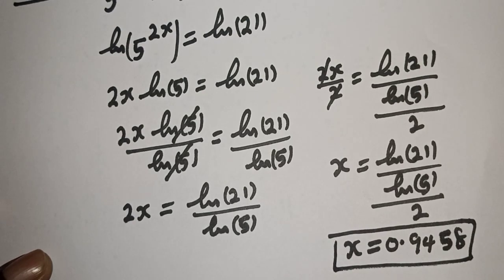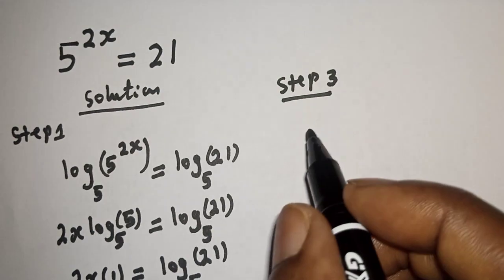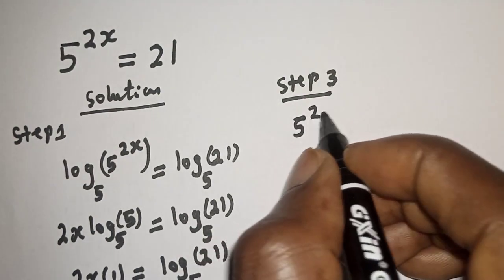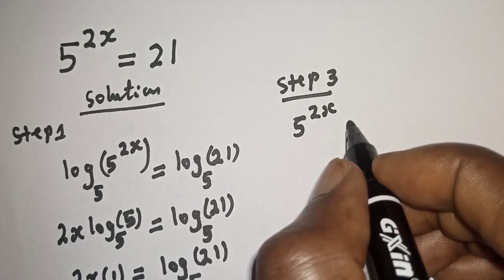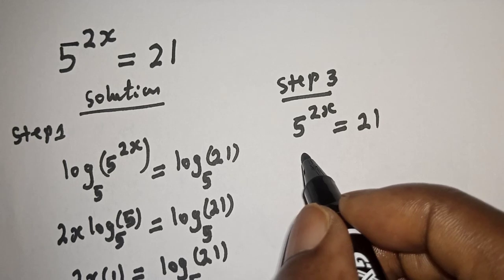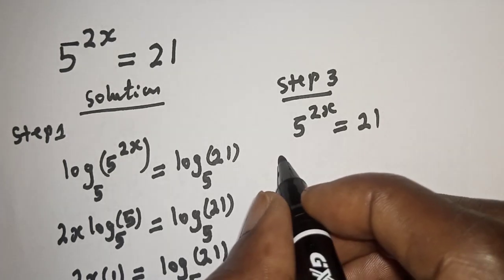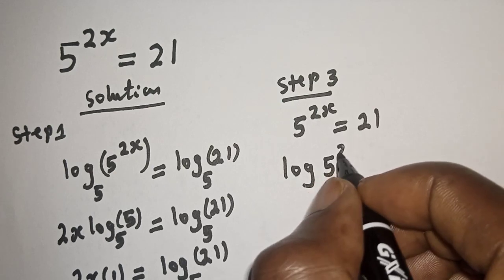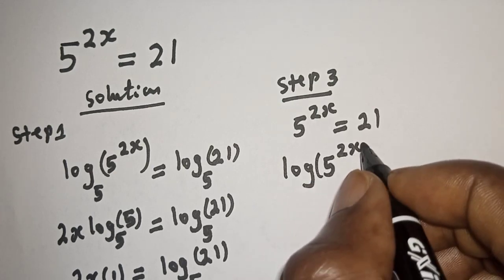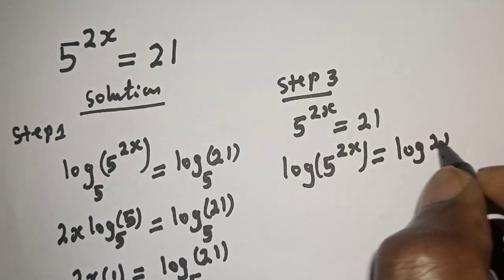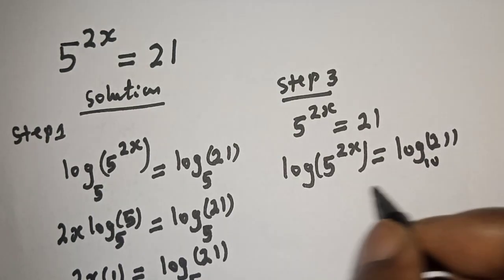Now let's consider the third method. With the third method, we have the given equation 5 raised to the power 2x is equal to 21. So let's take the log of both sides with base 10. That is, log of 5 raised to the power 2x base 10 is equal to log 21 base 10.